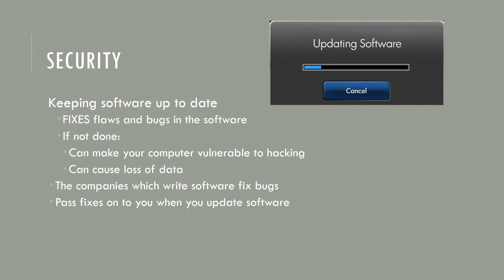Updating your software is a very important part of security. There may be flaws and bugs in your software, like your Windows, and when you update, those flaws and bugs get fixed. If you do not do it, you could be making your computer vulnerable to hacking and you could lose data. Hackers are constantly finding new ways to hack into computers, so the companies which write the software fix the bugs and loopholes through which hackers can get in, and they pass those fixes onto you. When you update your software, those fixes get applied to your computer.